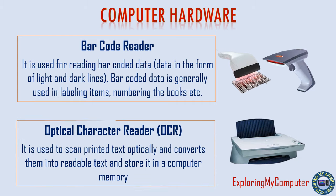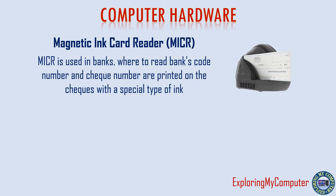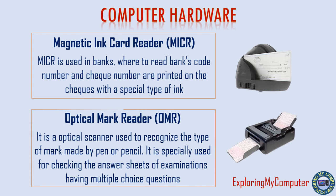Optical Character Reader (OCR) is used to scan printed text optically and converts it into readable text and store it in computer memory. Magnetic Ink Card Reader (MICR) is used in banks, where the bank's code number and check number are printed on checks with a special type of ink. Optical Mark Reader (OMR) is an optical scanner used to recognize the type of mark made by pen or pencil; it is specially used for checking answer sheets of examinations having multiple choice questions.